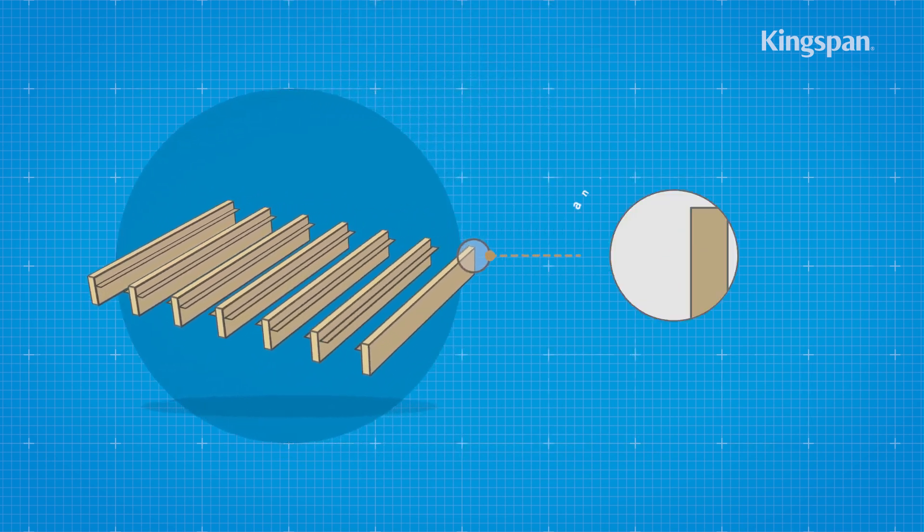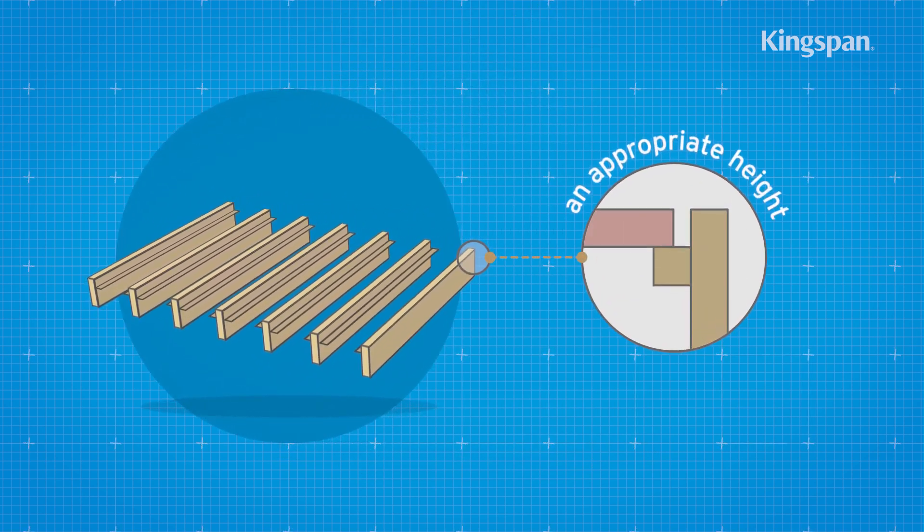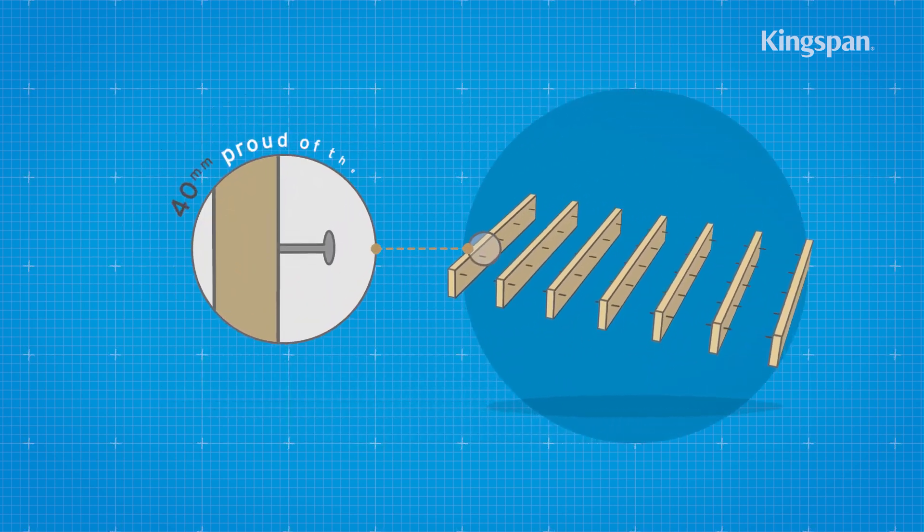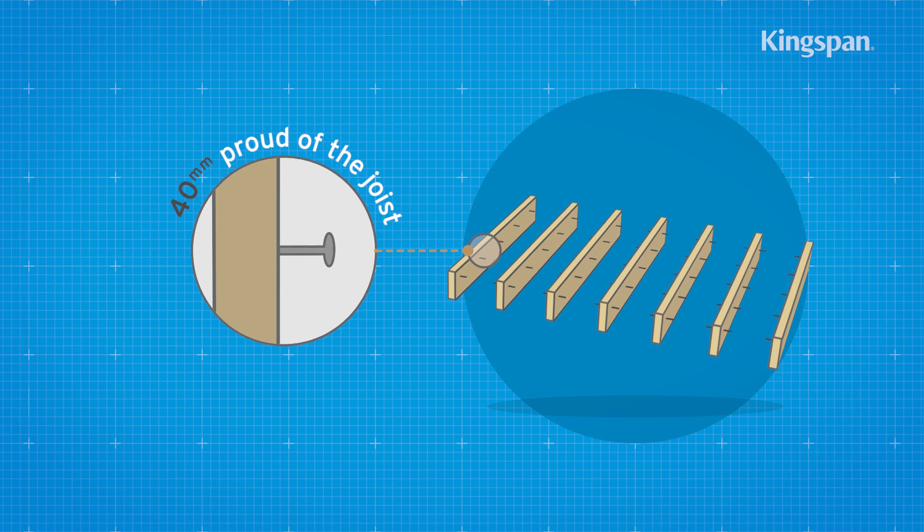These should be placed at an appropriate height to suit the thickness of board being fitted. If using nails, these should remain 40mm proud of the joist.